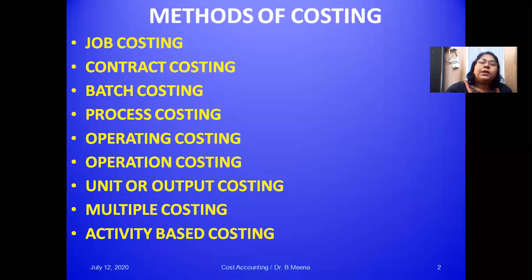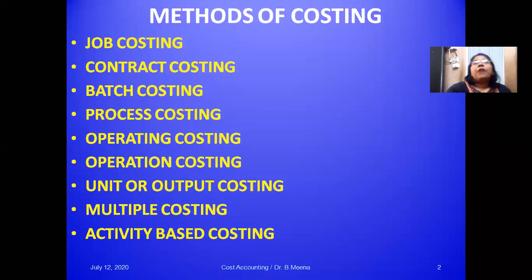Next is process costing. This method of cost ascertainment is used where the input is processed through several distinct processes to be converted into a finished product. The processes are carried out in a continuous sequence where the raw material is introduced in the first process, and the finished product of each process becomes the raw material for the subsequent process, until the last process where the finished product is transferred to the finished stock account. A separate account is maintained for each process. Oil refining and pin making are examples of process costing.